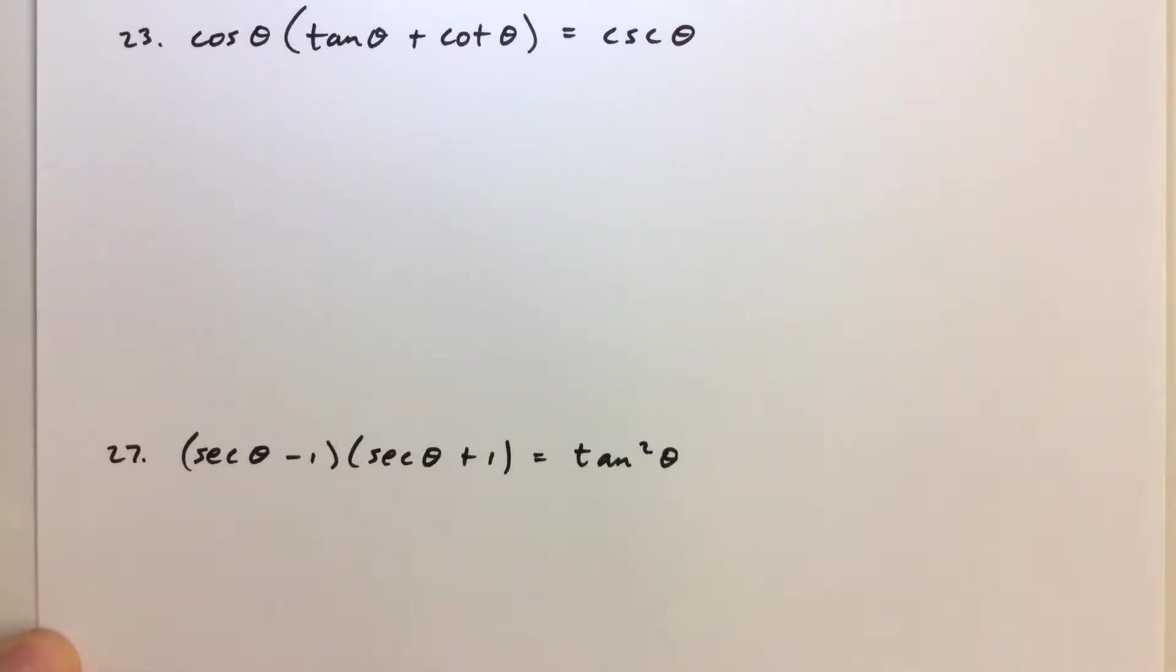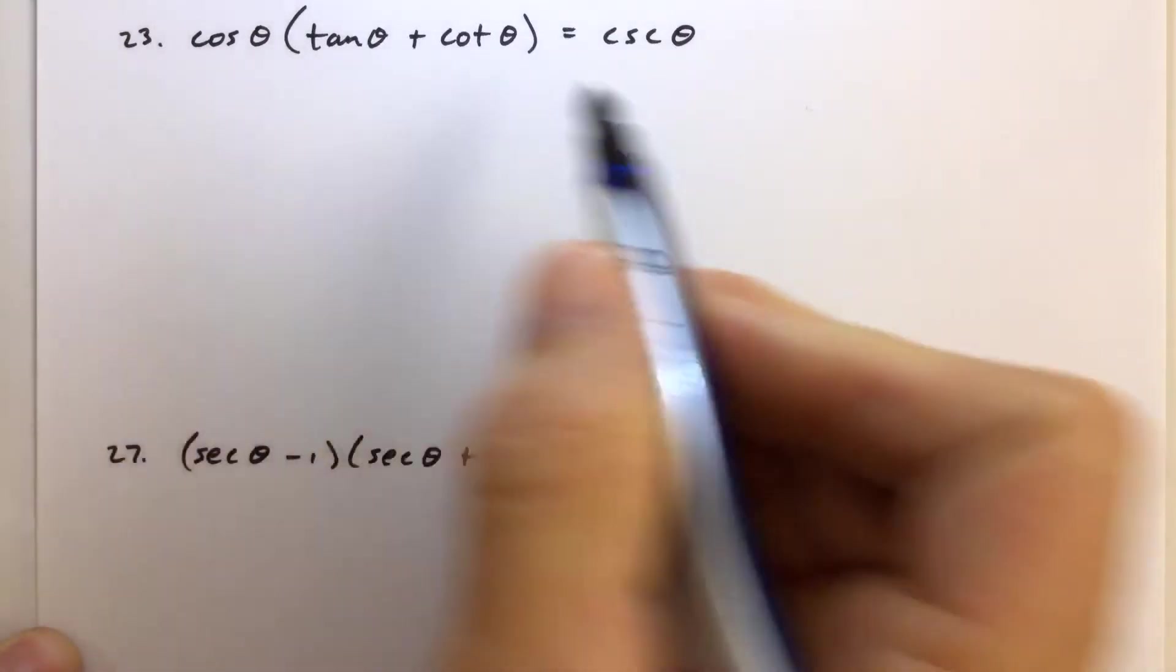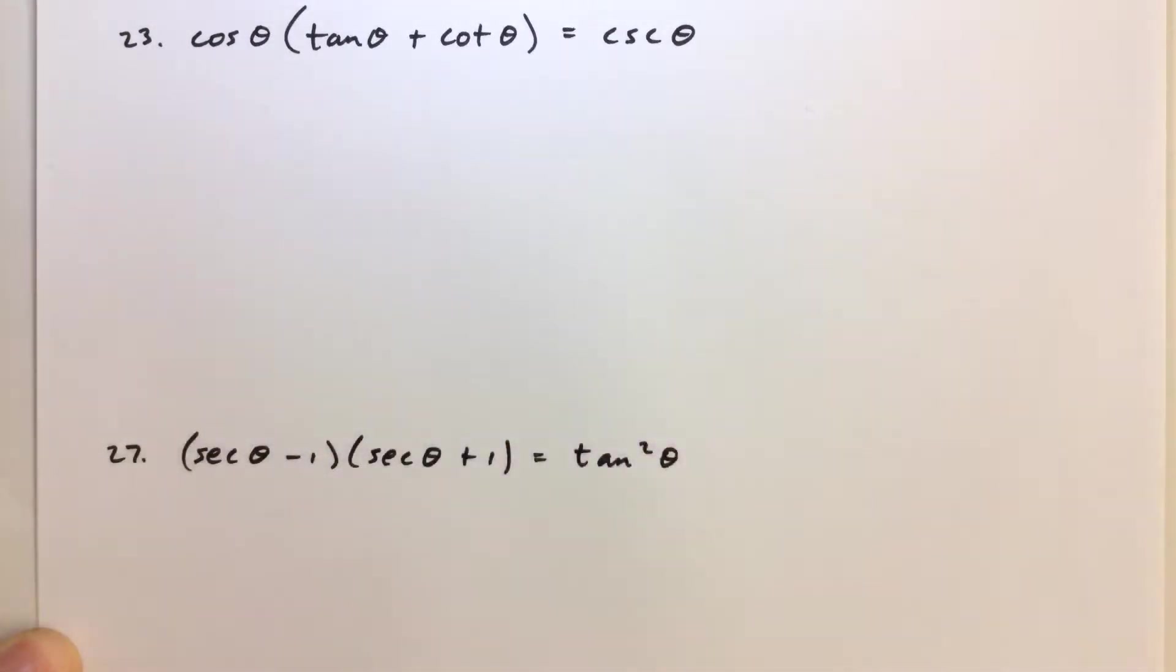So they are identities, and it's just our job to figure out how to get one side to look like the other. And if you remember,